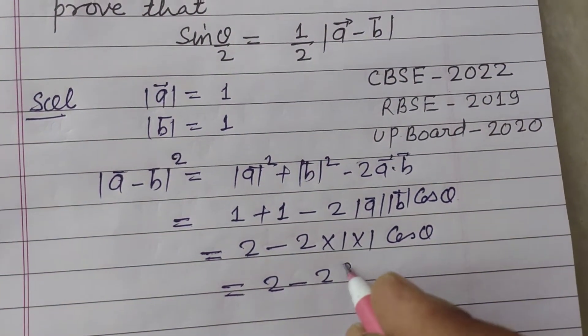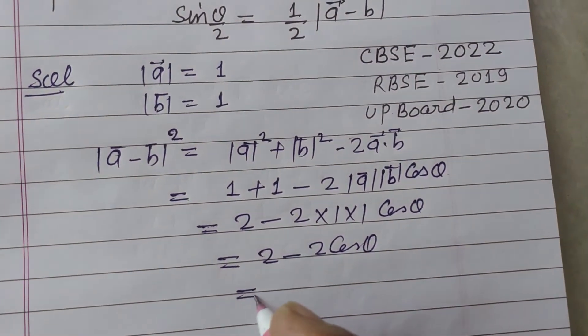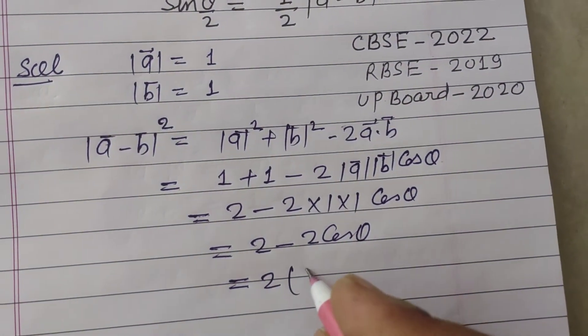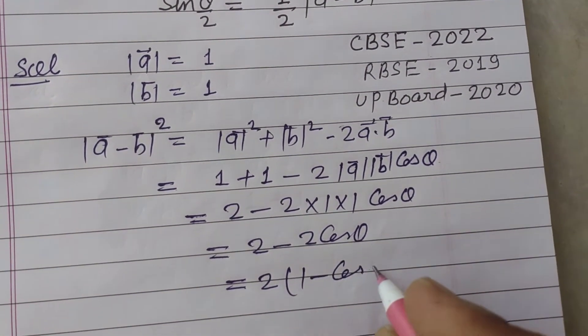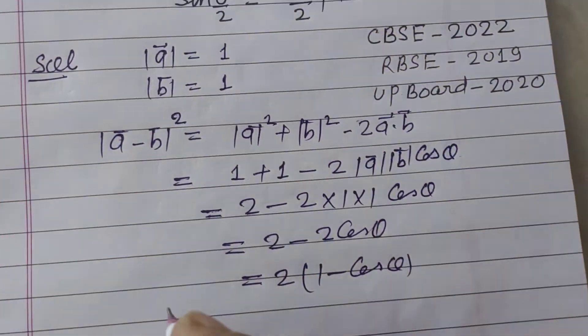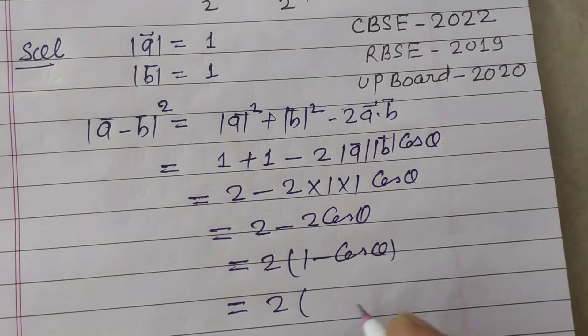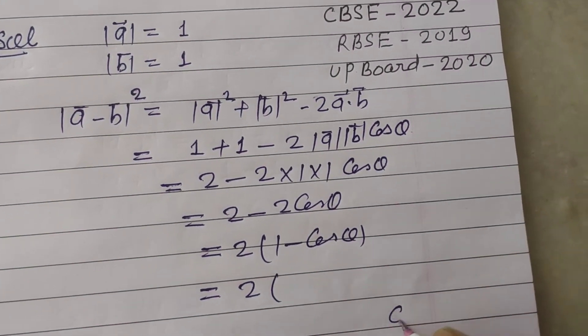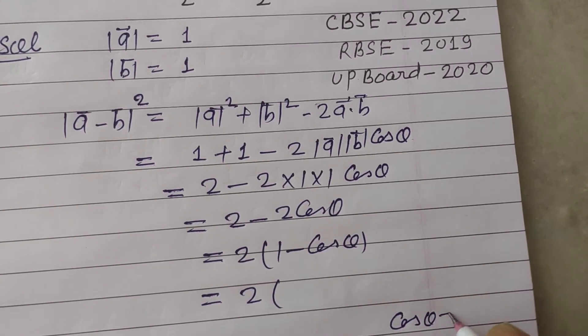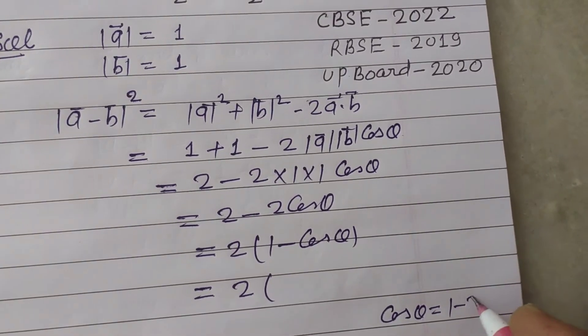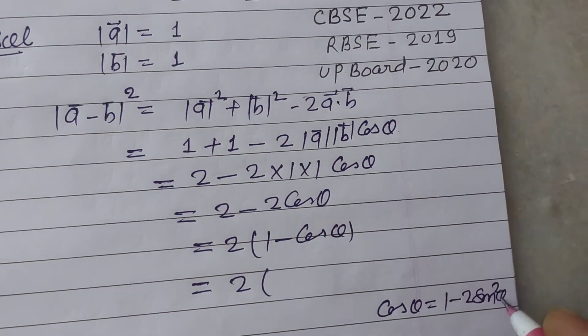Or we write it as 2 minus 2 cos theta, 2 is common from this. So 1 minus cos theta equal to, you know that cos theta equals 1 minus 2 sin square theta by 2.